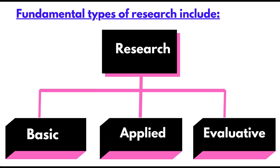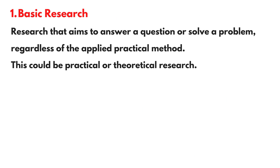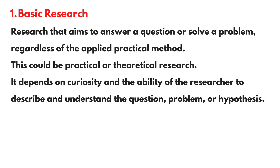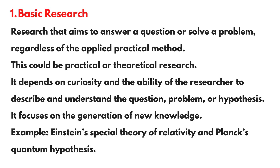Fundamental types of research include basic research, applied research, and evaluative research. Basic research aims to answer a question or solve a problem regardless of the applied practical method. This could be practical or theoretical research. It depends on curiosity and the ability of the researcher to describe and understand the question, problem, or hypothesis. It focuses on the generation of new knowledge. Examples include Einstein's special theory of relativity and Planck's quantum hypothesis.